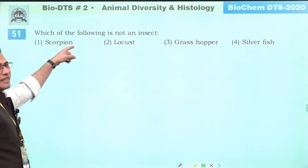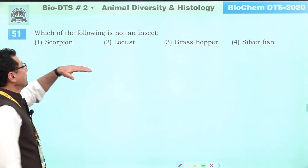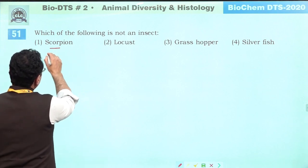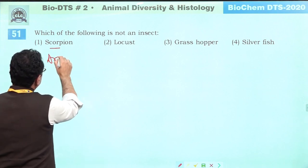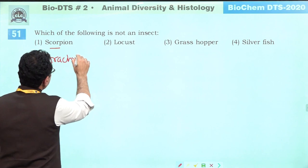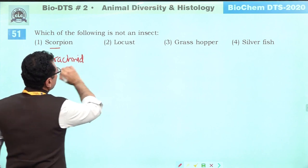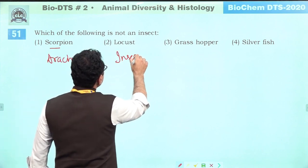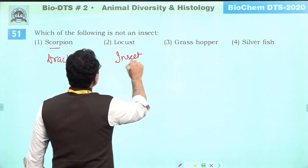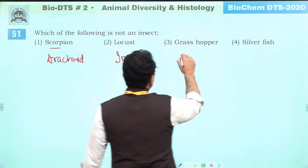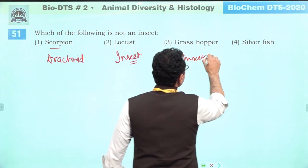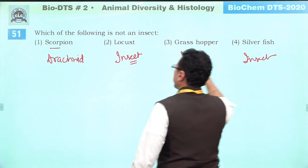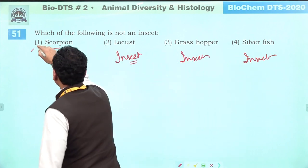Which of the following is not an insect? Scorpion is an arachnid, not an insect. Locust, grasshopper, and silverfish are all insects. Answer is one — scorpion.